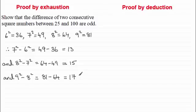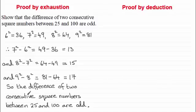So we've exhausted all the possibilities. And we can summarize this by saying that the difference of two consecutive square numbers between 25 and 100 are odd. Always make sure you put in a conclusion at the end of your proof. Tell the reader that you've actually realized what you're doing, and that you can see in this case all your answers are odd.